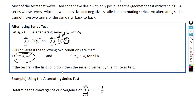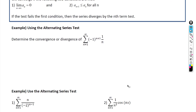If the first condition fails, then the series diverges by the nth term test. That would be the reasoning for that piece. Let's go to some examples.